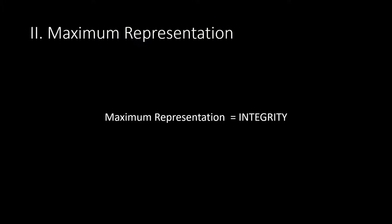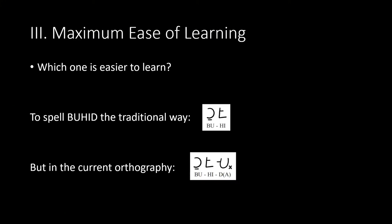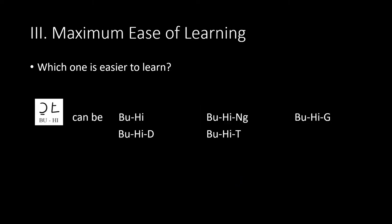To summarize maximum representation: it is about integrity in all of its senses. For maximum ease of learning — in the traditional way you spell without the coda, but in the current orthography you spell with a vowel killer. Initially the elders were very hesitant about introducing a vowel killer and wanted to keep the traditional way. But when we did reading and production exercises, even the elders could not read some of their own writing because of the absent coda. For example, without the coda, Bu-Hi could be read as many different words, and without clear context one cannot predict which word is intended.